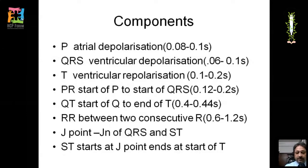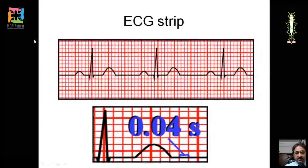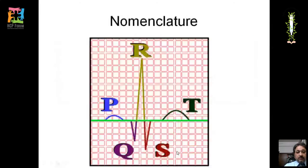A normal ECG with PQRST waves is shown here. The small square is 1 millimeter in length and 0.04 seconds in duration. The large square comprises five small squares, so its duration is 0.04 times five, which equals 0.2 seconds. This is the magnified view of the PQRST complex.